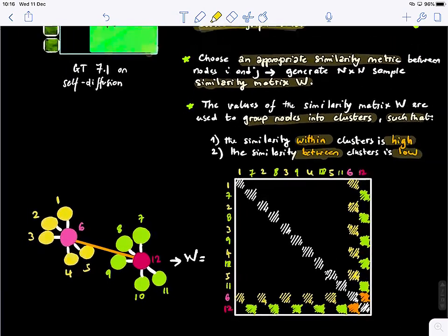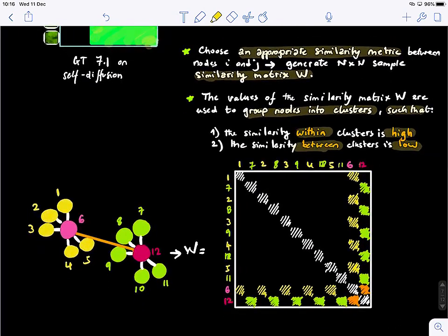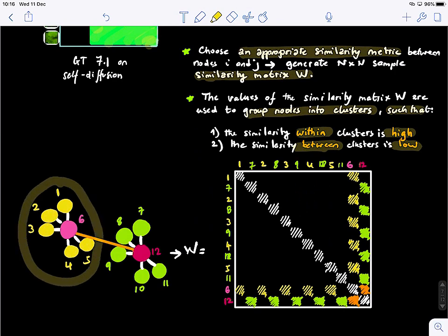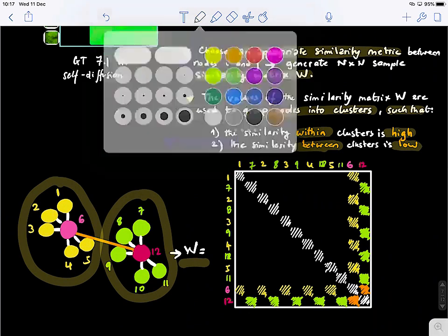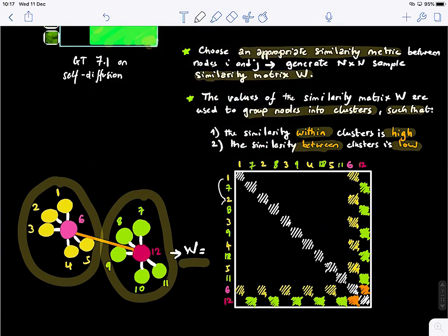So if you guys look at this example, how many modules we have here? We have two modules. These are the two modules that we have, the yellow one and the green one. And when I created this W matrix, basically on purpose, I alternated these nodes. And you can see that the structure here is not very clear of the cluster.